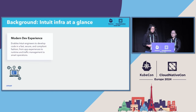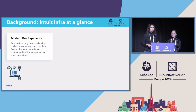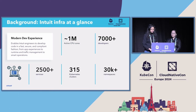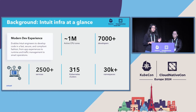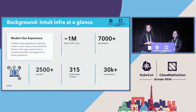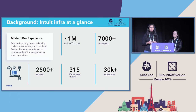Intuit is a global fintech company that builds several financial products and services. If you have ever used TurboTax to file your taxes or QuickBooks for accounting and payroll, know that they are all running on Kubernetes-based platform infrastructure. Lily and I are part of this platform team. We support about 7,000 application developers within Intuit, and these developers are running about 2,500 production services, running on about 315 Kubernetes clusters that have about 30,000 Kubernetes namespaces. This is a pretty large-scale operation.